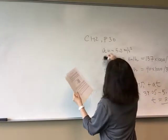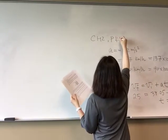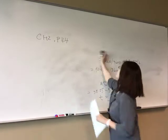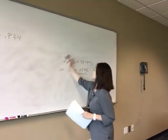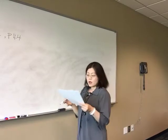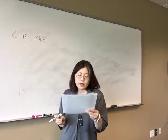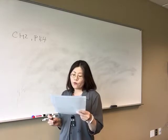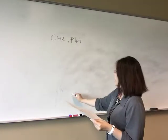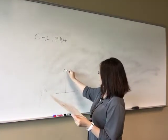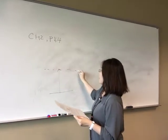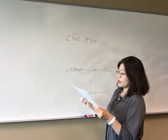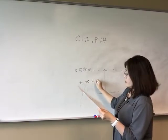Now we're going to do problem 44. When startled, an armadillo will lift upward. Suppose it rises 0.544 meters in the first 0.2 seconds. So the height is 0.544 meters and the time it took is 0.2 seconds.